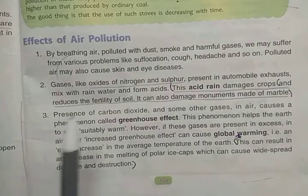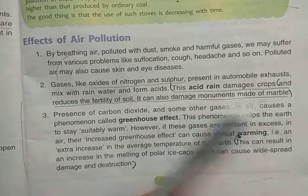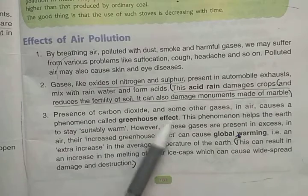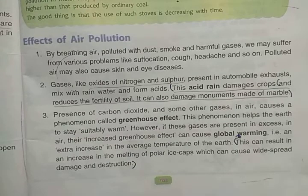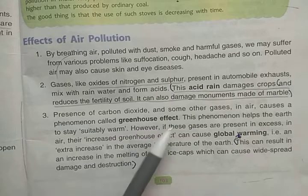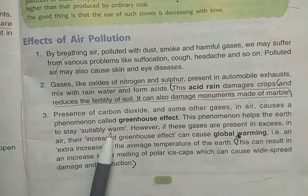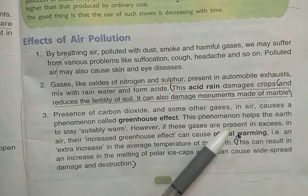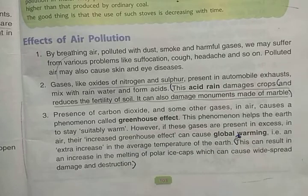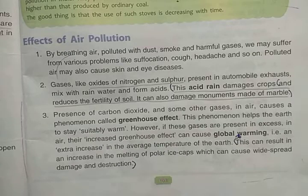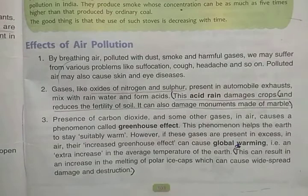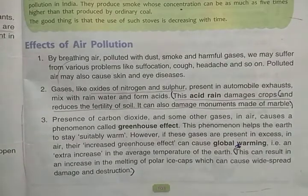The presence of carbon dioxide and some other gases in air causes a phenomenon called the greenhouse effect. Heat from the sun gets trapped due to the greenhouse effect, which helps the earth stay suitably warm. However, if these gases are present in excess, they increase the greenhouse effect and cause global warming, which is a very big problem today.